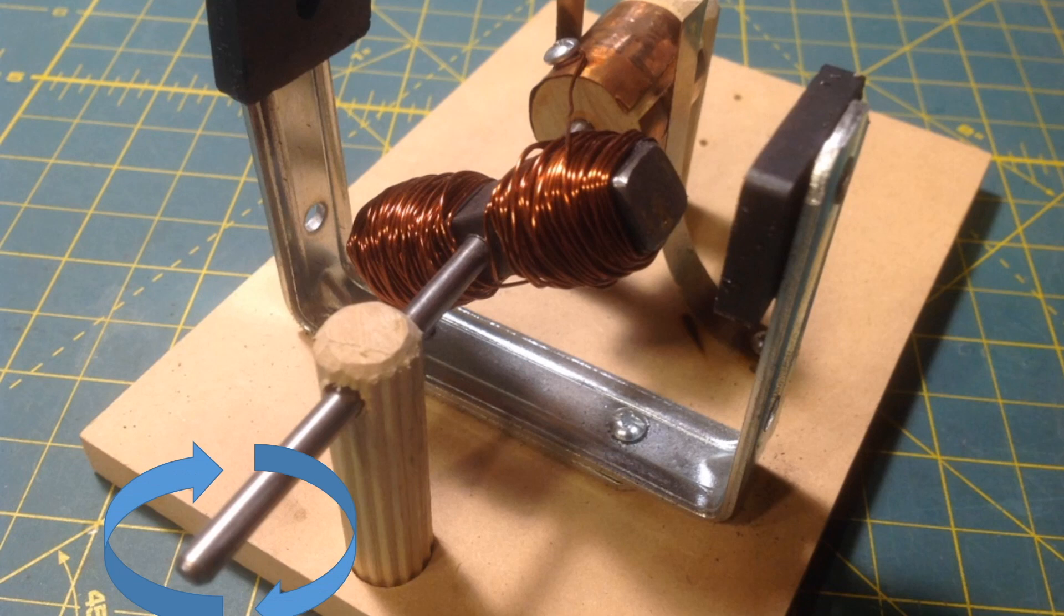This will go on and on until voltage is removed from the brushes, but while there's current flowing through the coil that makes up that rotor, we can take advantage of that rotation to do work through attached gears, fans, pulleys, cams, or drills.